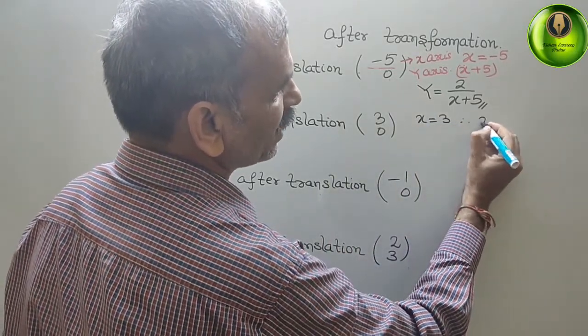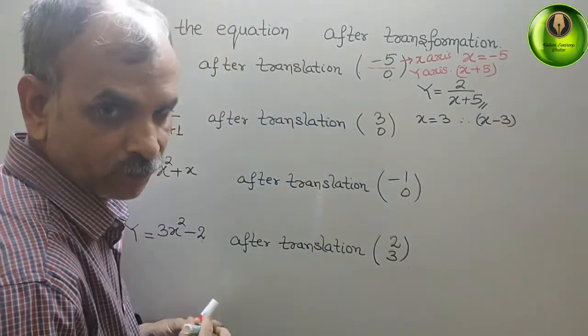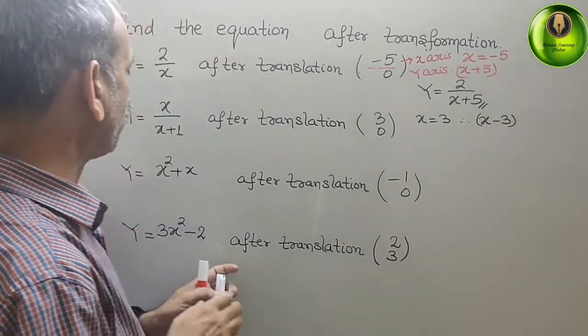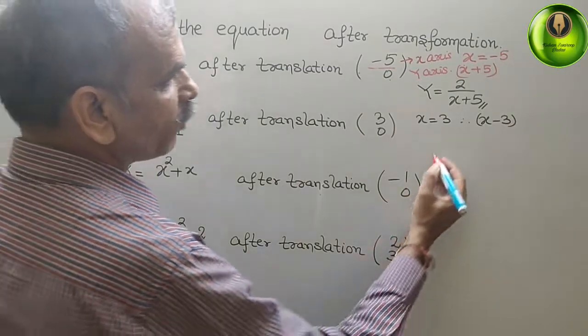Therefore, what is the factor? x minus 3 is the factor. Therefore, what we will write? In place of x, we will write x minus 3.